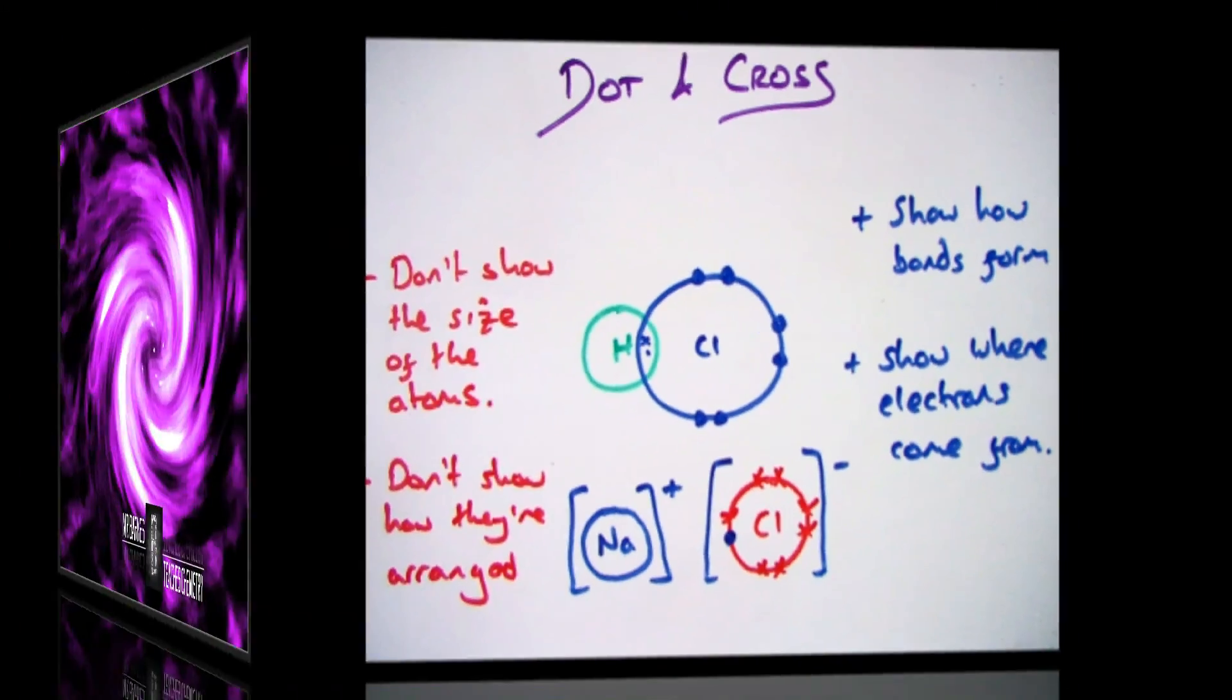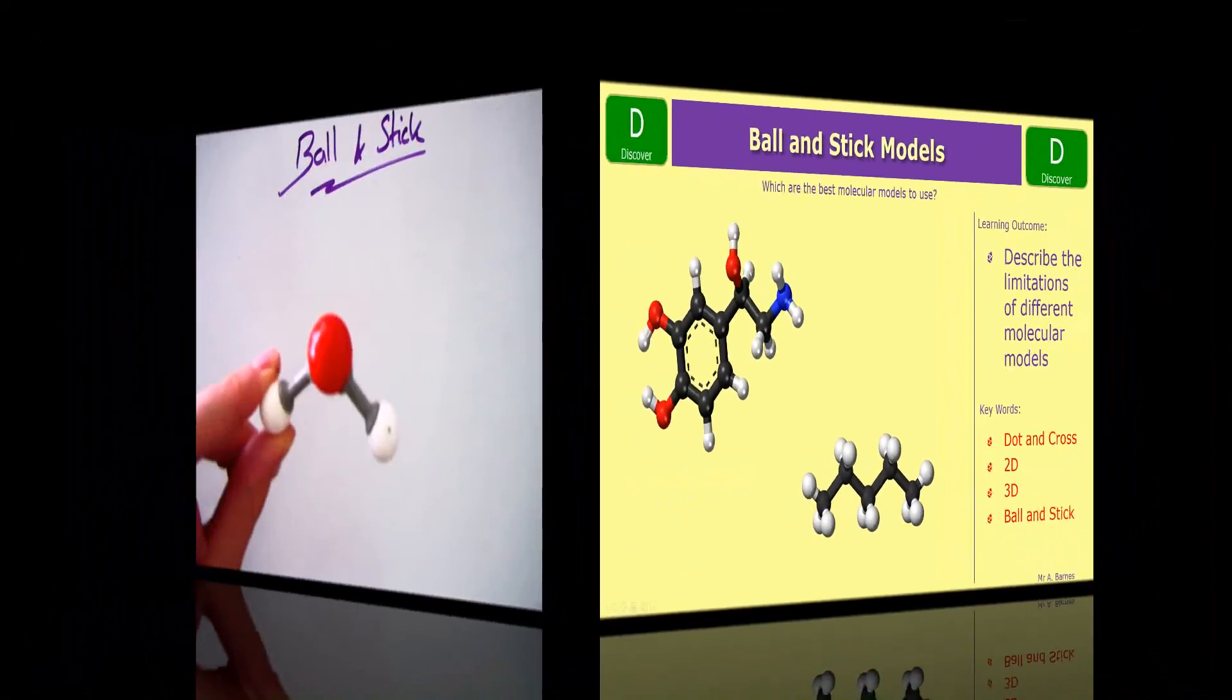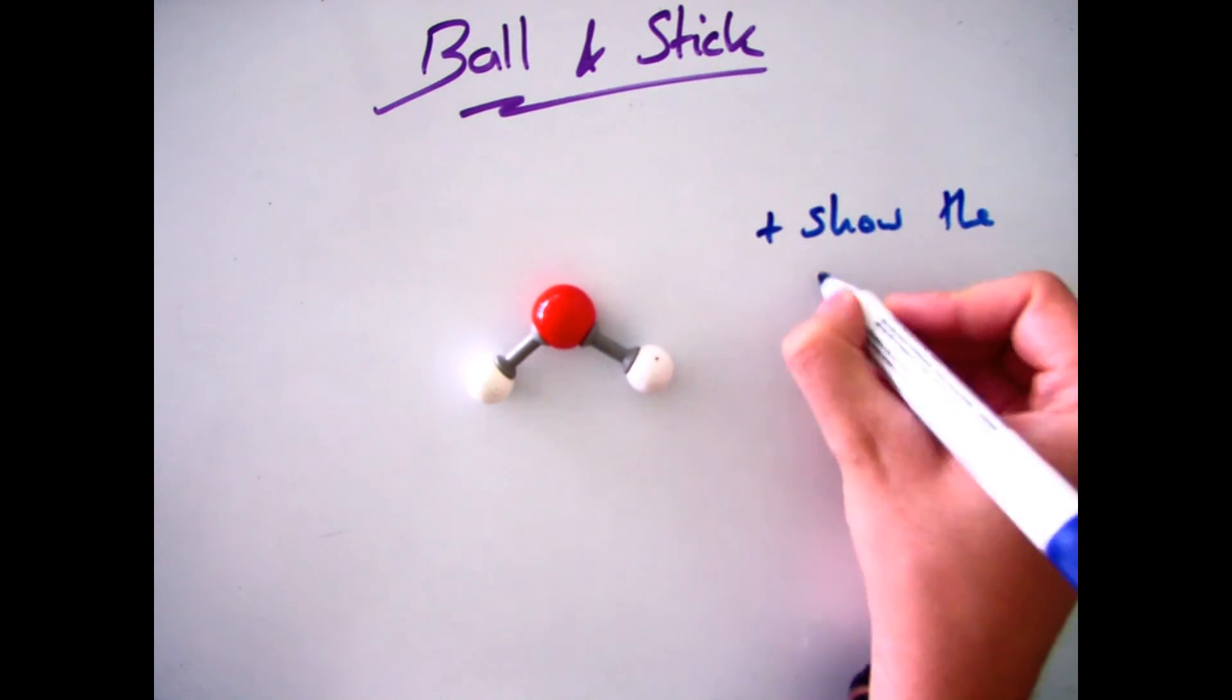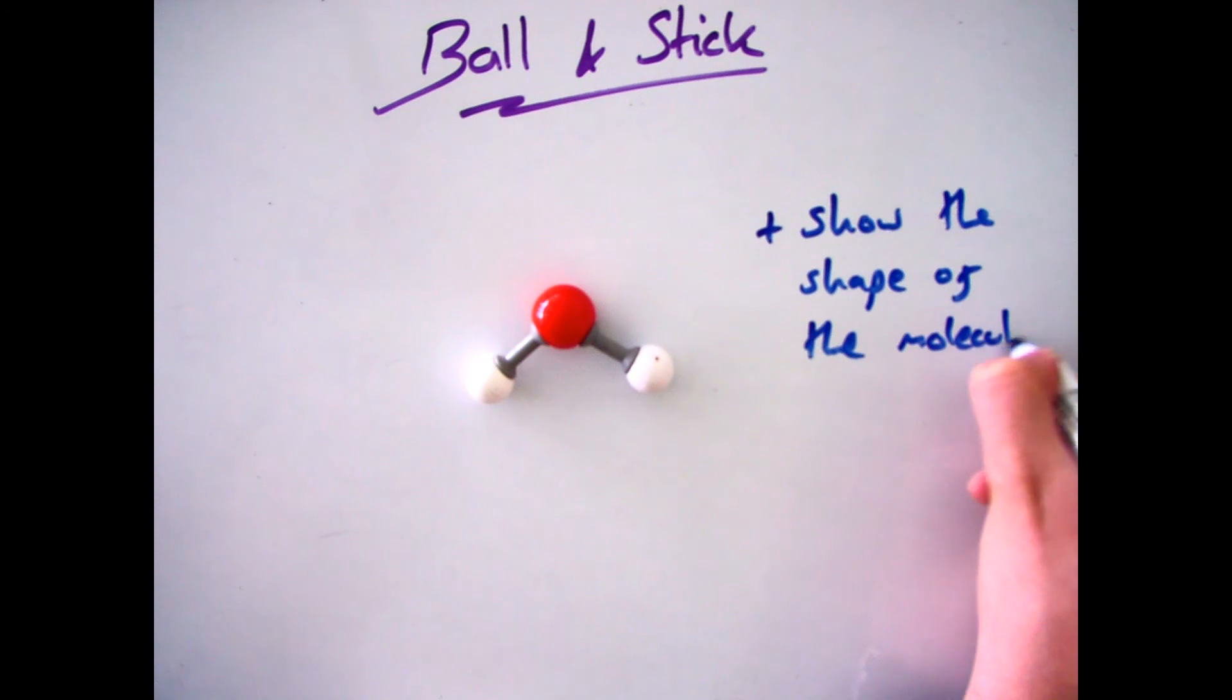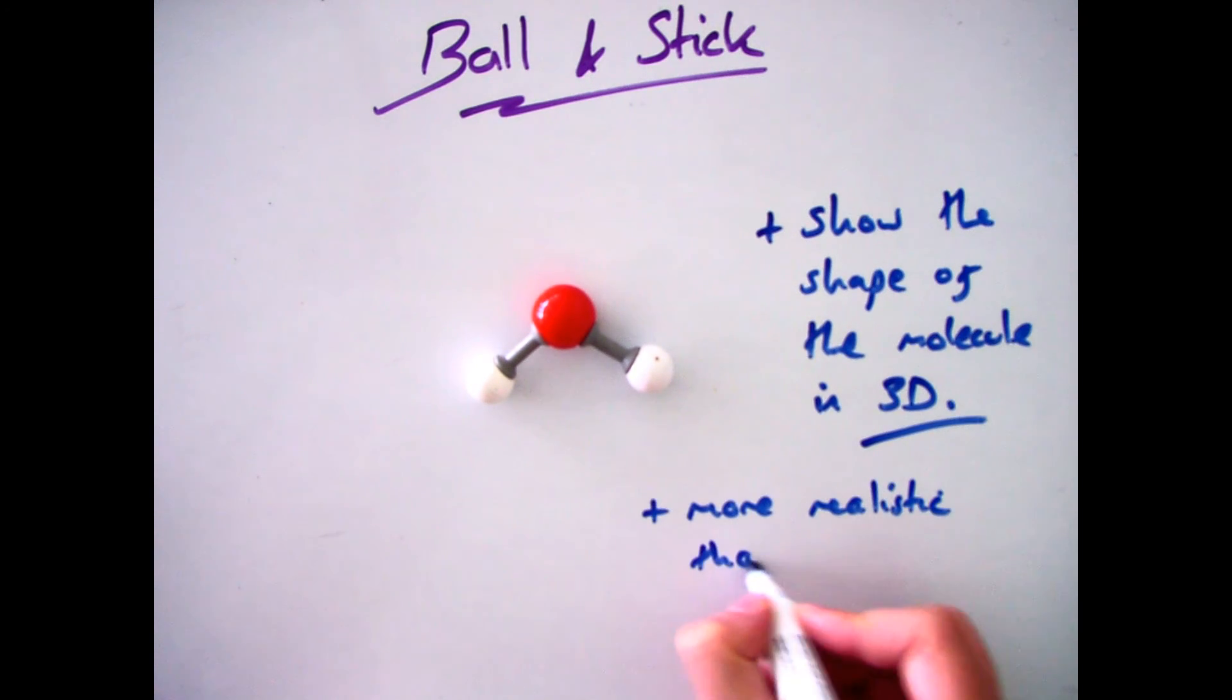Right, let's move on to the final model that you need to know then, which is ball and stick diagrams. Now the great thing about ball and stick diagrams is they actually show you the shape of the compound in 3D, which is a lot more realistic than the 2D ones we've looked at previously.